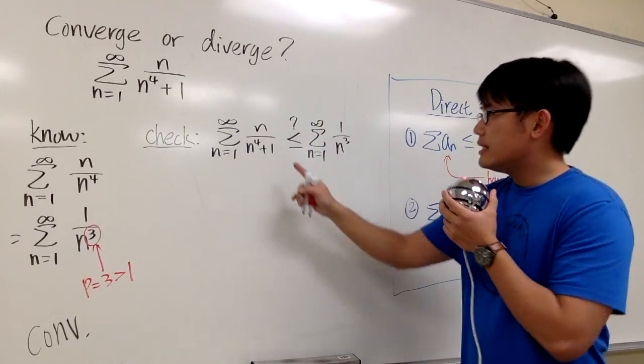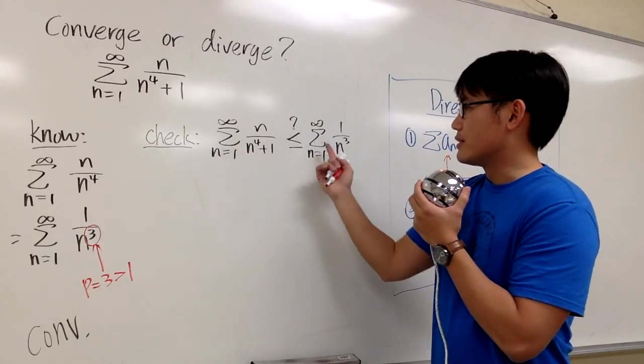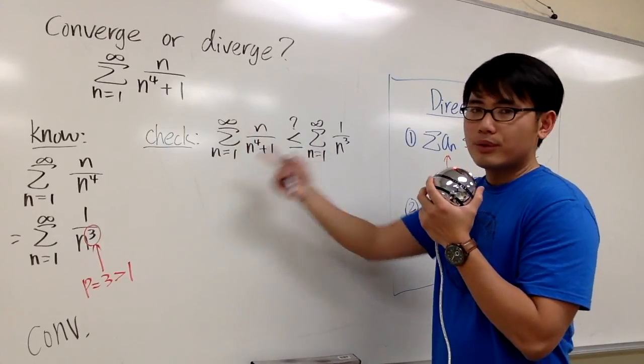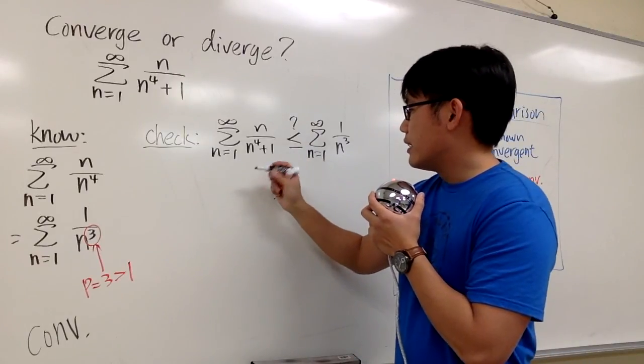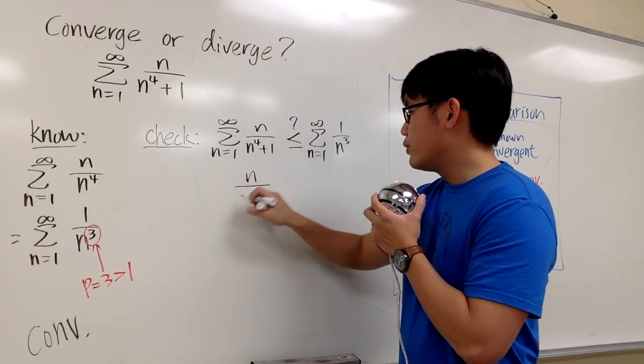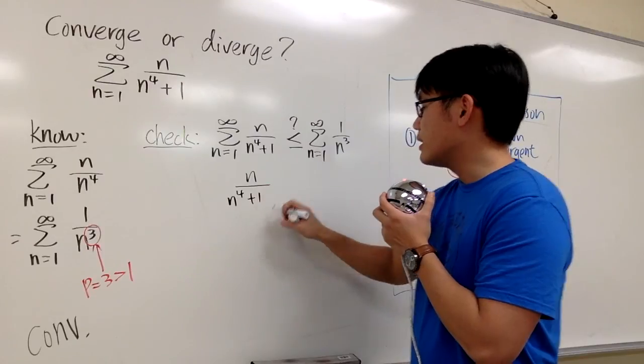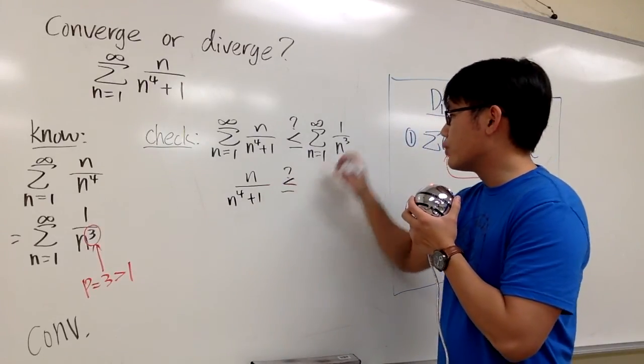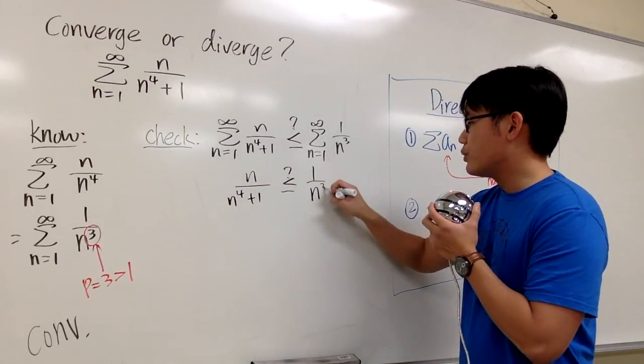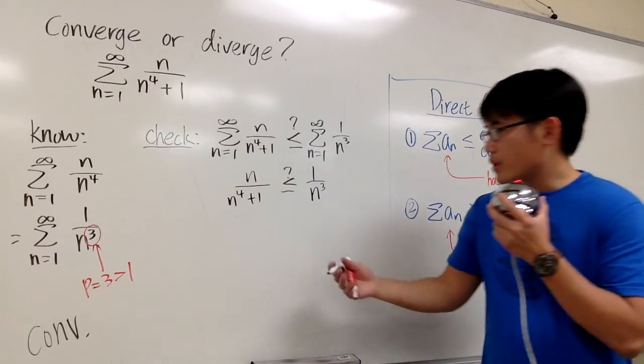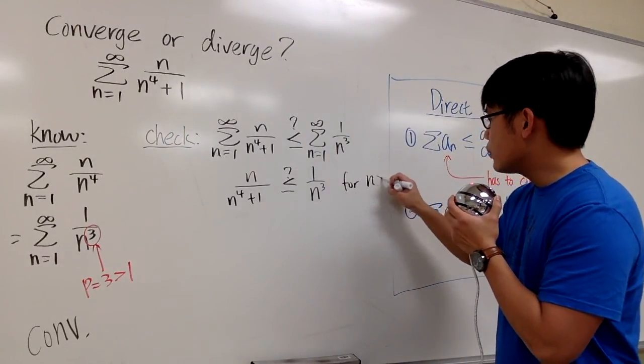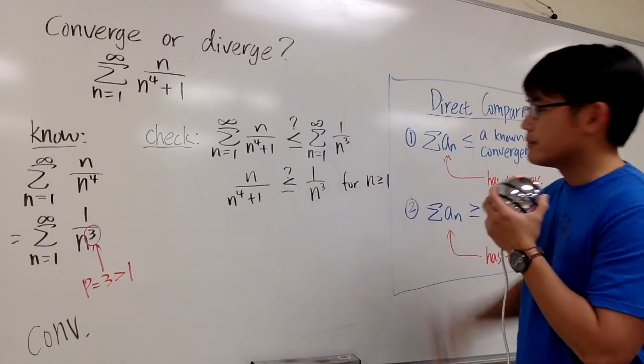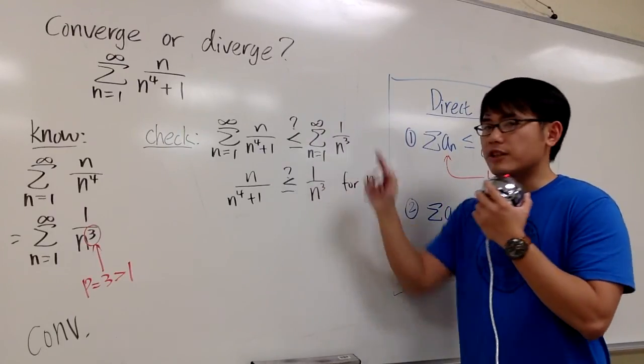Because the sigmas are going from 1 to infinity on both sides, let's just ignore the sigma and let's just compare. Is n over n to the fourth power plus 1 less than or equal to 1 over n to the third power? Well, this should be true or not for n greater than or equal to 1. That's all we care, right, because n goes from 1 to infinity.